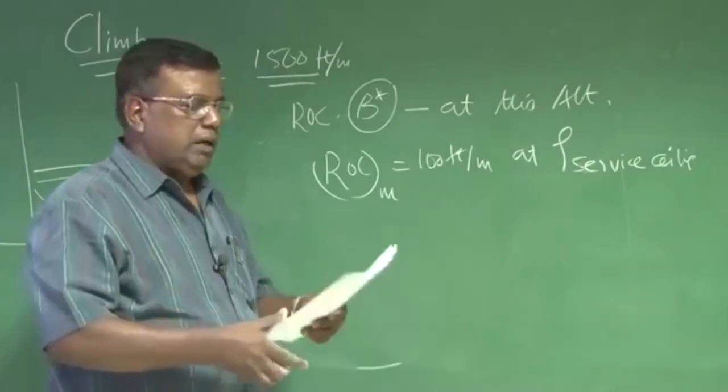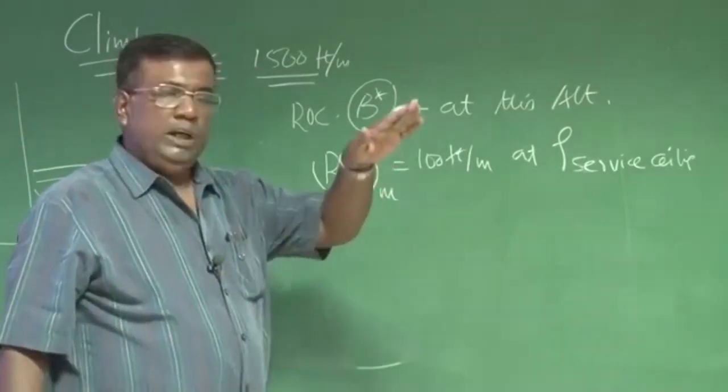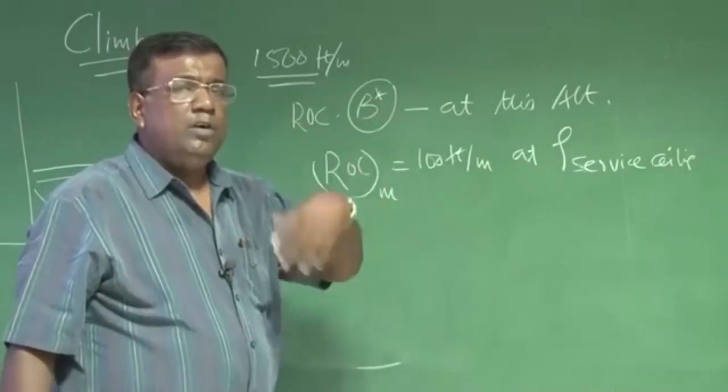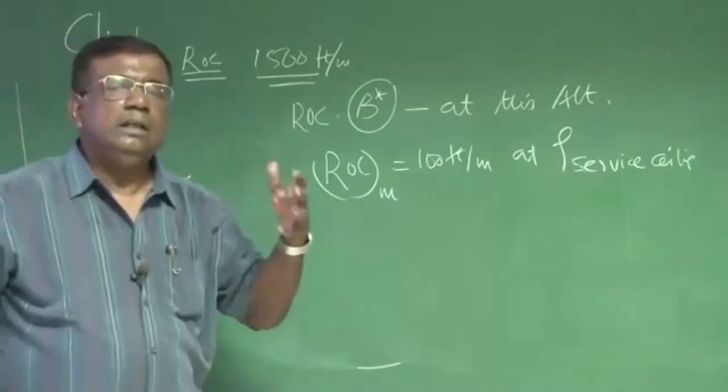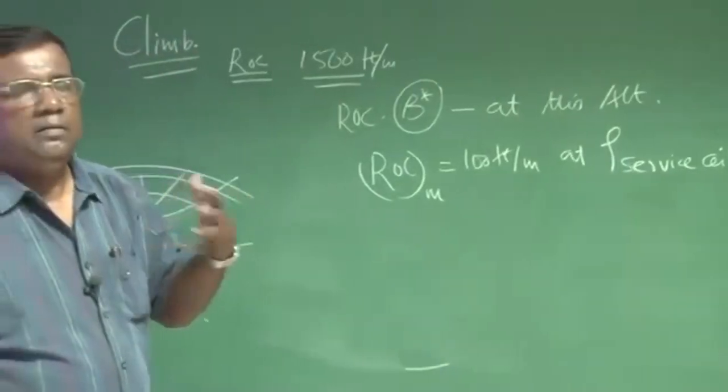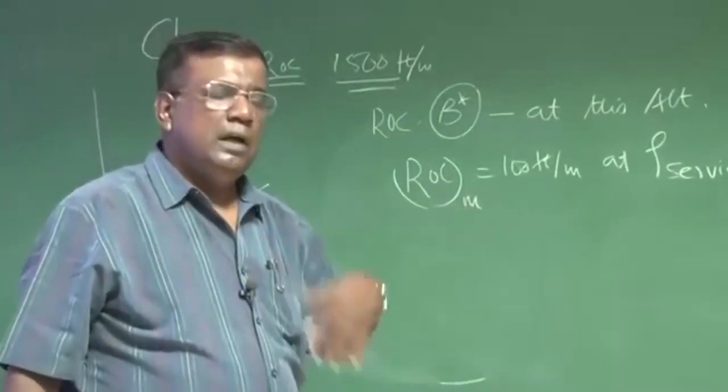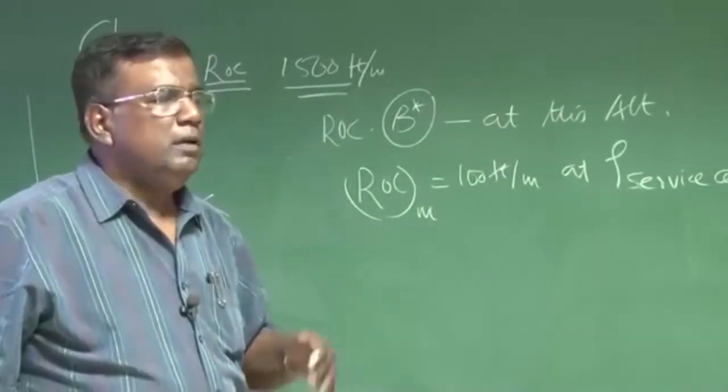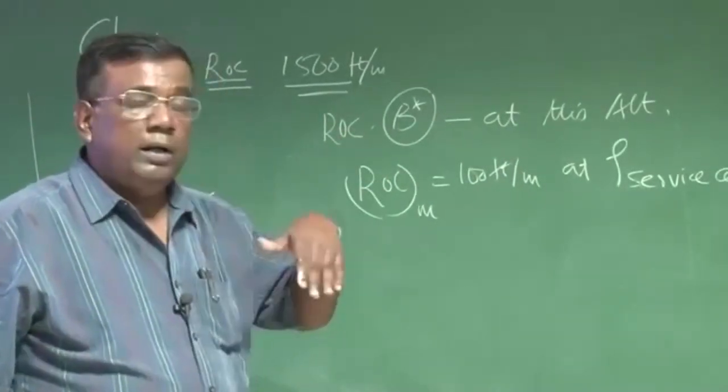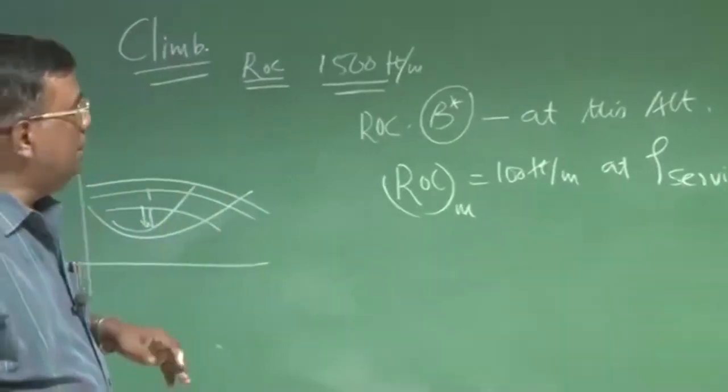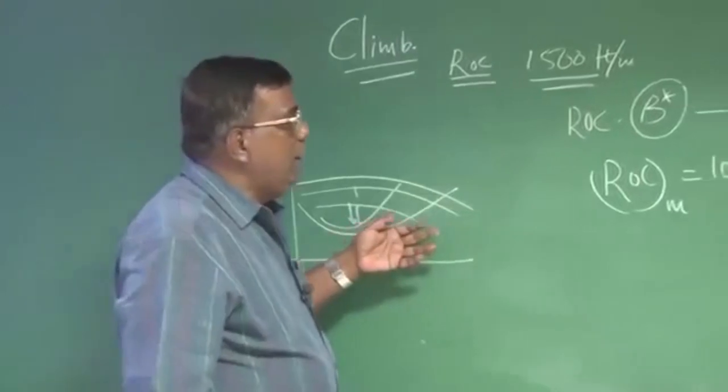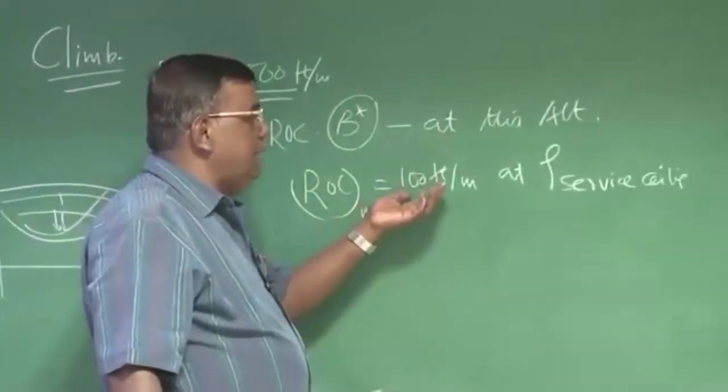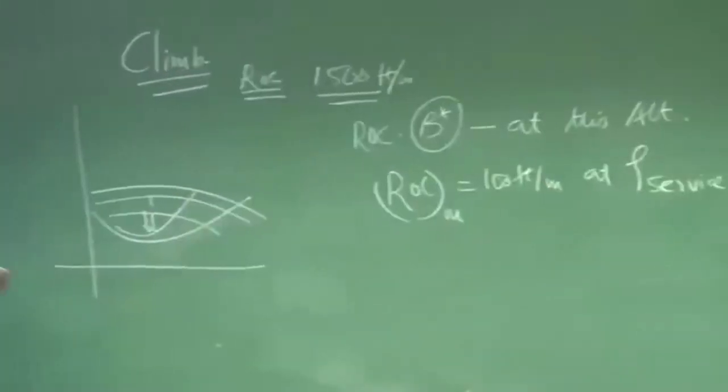Because whatever climb rate you have at the sea level, as I am going up and up, amount of air is reducing. So your engine will not develop or deliver that much of power which was available at the sea level. It will go on reducing. And also the power required graph also changes. You have seen. So excess power reduces. So how do I ensure the rate of climb maximum of 100 feet per minute at particular altitude, which is service ceiling?